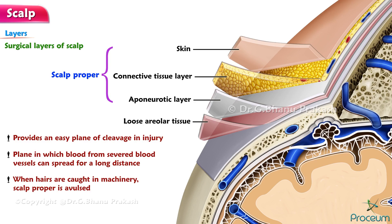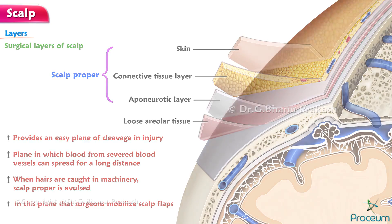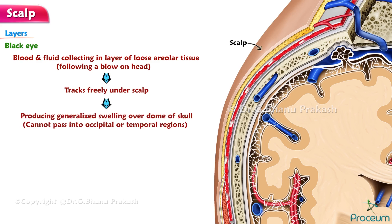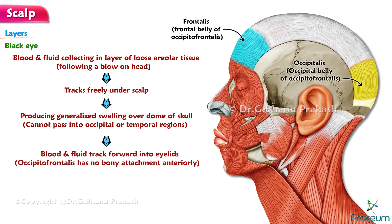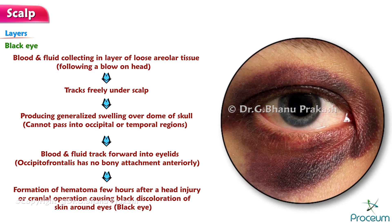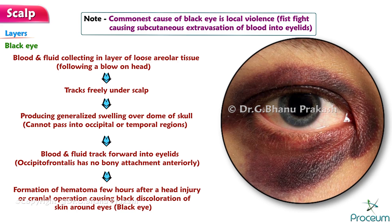When the hairs are caught in machinery, the scalp proper is avulsed in this plane — the plane in which surgeons mobilize scalp flaps. Black Eye: Blood and fluid collecting in the layer of loose areolar tissue following a blow on the head tracks freely under the scalp, producing generalized swelling over the dome of the skull, but cannot pass into the occipital or temple regions because of the bony attachments of the occipitofrontalis. The blood and fluid can however track forward into the eyelids because the occipitofrontalis has no bony attachment anteriorly. This leads to hematoma formation causing black discoloration of skin around the eyes — a condition called black eye.